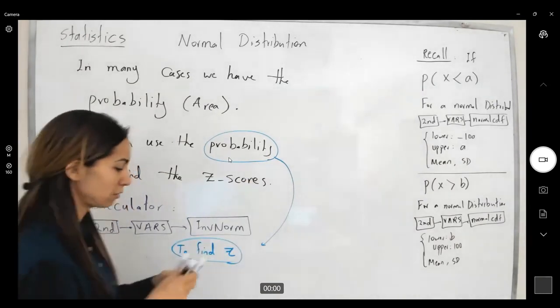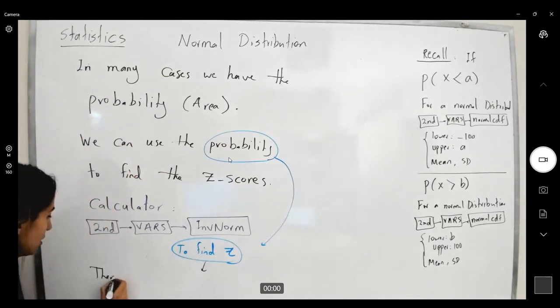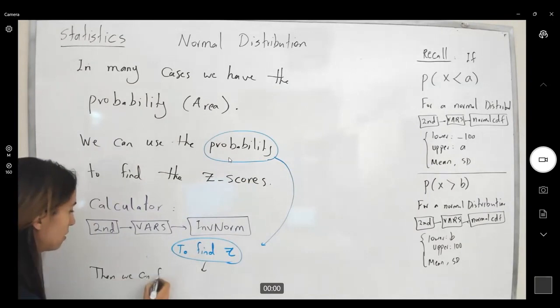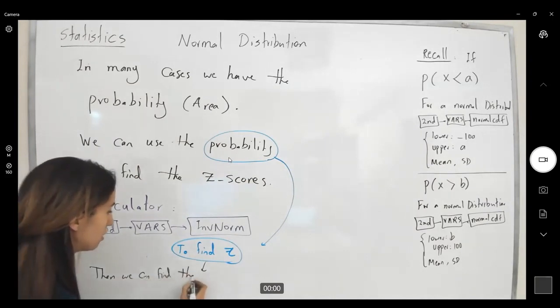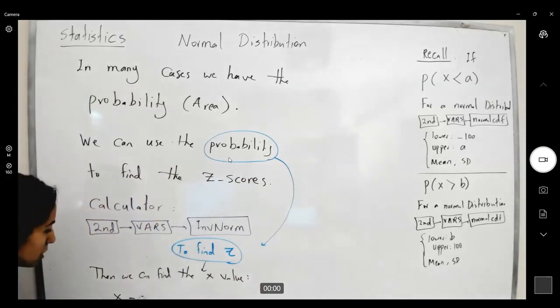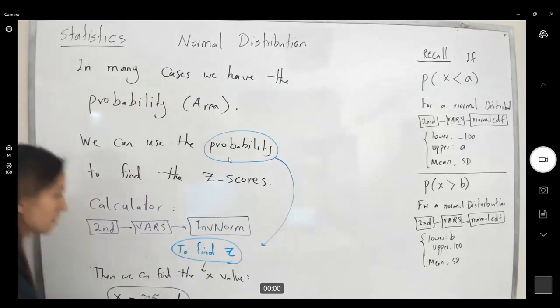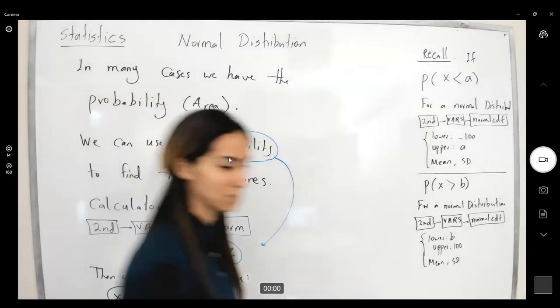You can use the probability to find your Z. After you find your Z, then you can find your X. X value becomes Z times sigma plus mu.